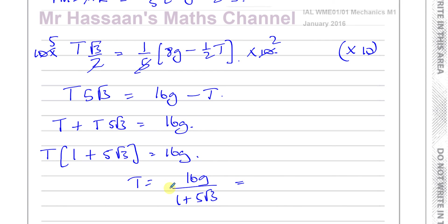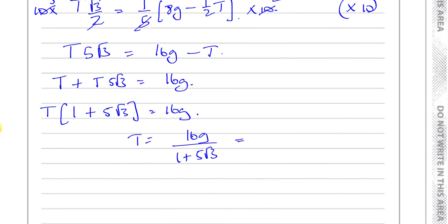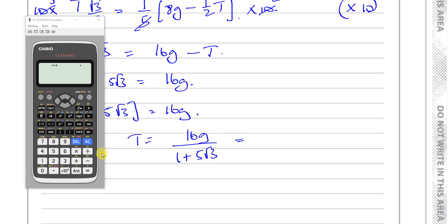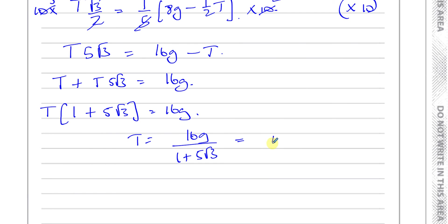I like to keep things in the exact form until the last stage. Now I can actually put the values in. I know G is equal to 9.8, so I can just stick this all into the calculator. So I can have 16 times 9.8 divided by 1 plus 5 root 3. And that should give us our answer, which is 16.231.